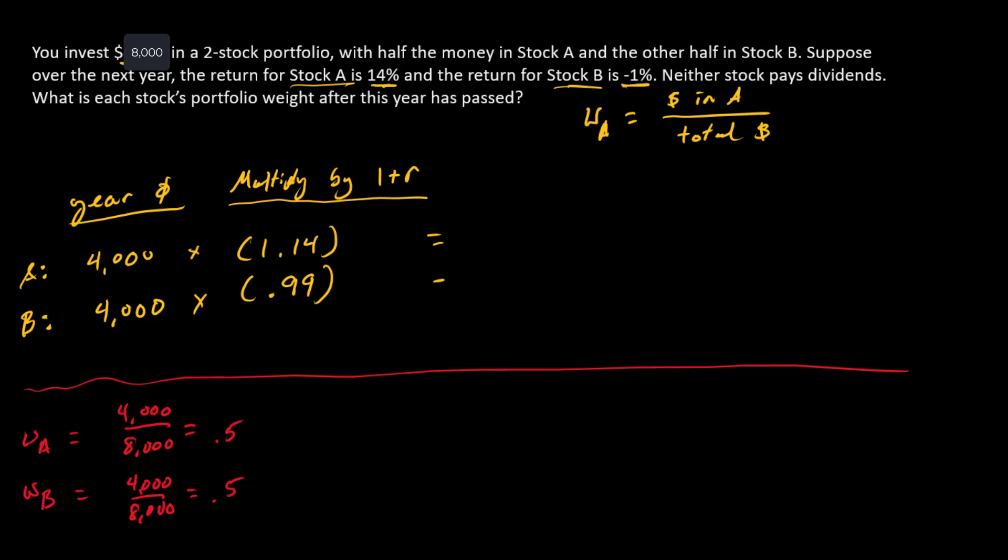When we do that multiplication, we'll get to our year one values. Critically here, we note that neither stock pays dividends, so all of this return is in the form of a capital gain or loss, and everything we're doing here is going to work just fine.